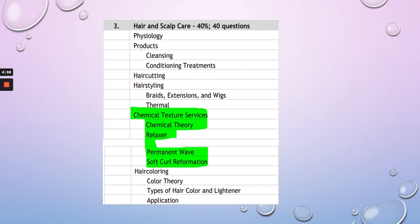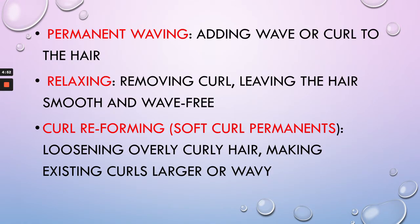Continuing with our topic hair and scalp care, we're focusing on chemical texture services. Chemical texture services are hair services that cause a chemical change within the hair's natural wave and curl pattern. Permanent waving is adding wave or curl to the hair. Relaxing is removing curl, leaving the hair smooth and wave free. Curl reforming, also known as soft curl permanents, is loosening overly curly hair and making the existing curls larger or wavy.